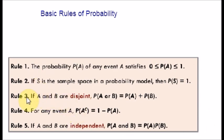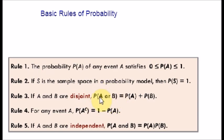Now let's move on to Rule 3, called probability involving multiple events. We will often be interested in finding probabilities involving multiple events, such as P(A or B) or P(A and B). P(A or B) equals P(A) plus P(B). You can read this as: the probability that event A occurs, or event B occurs, or both occur. The word 'or' means either one or the other or both.